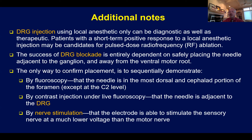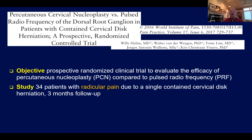Pulsed radio frequency is performed for 120 seconds with a maximum tip temperature of about 42 degrees centigrade. If we're going to inject using local anesthetics, that may be both diagnostic and therapeutic. I typically use 0.25% bupivacaine, about 1.0 mL, and sometimes add a non-particulate soluble steroid like dexamethasone sodium phosphate, preservative-free, one to two milligrams total. The success of the blockade is entirely dependent on safely placing the needle adjacent to the ganglion and away from the ventral motor nerve root. Nerve stimulation is the sine qua non — the best way to determine whether we're close to motor fibers.